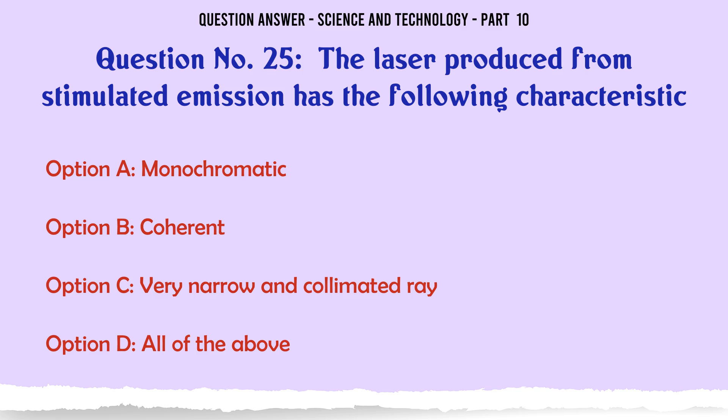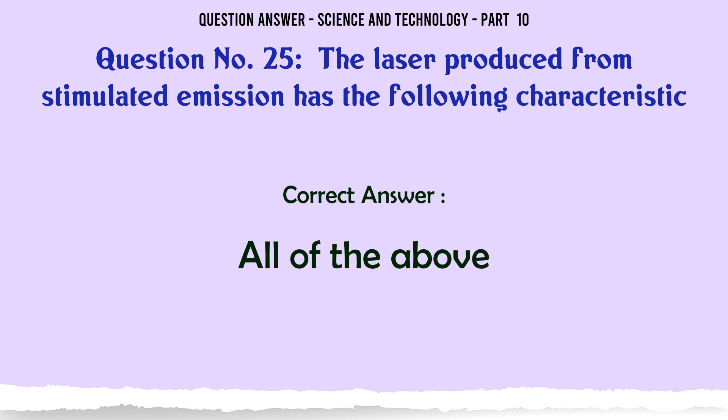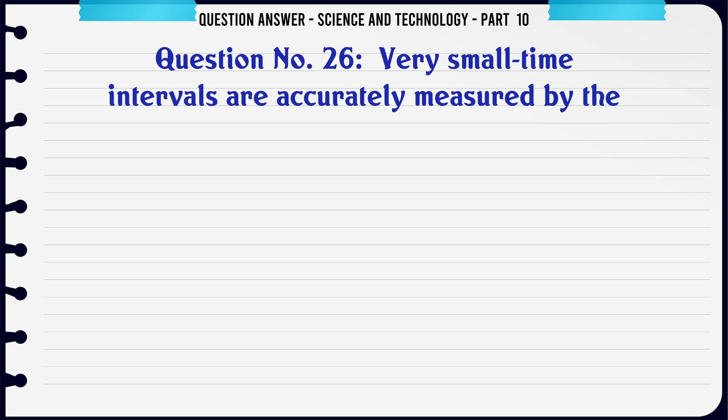The laser produced from stimulated emission has the following characteristic. A. Monochromatic. B. Coherent. C. Very narrow and collimated ray. D. All of the above. The correct answer is All of the above.